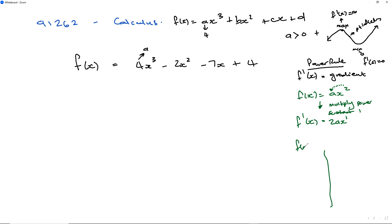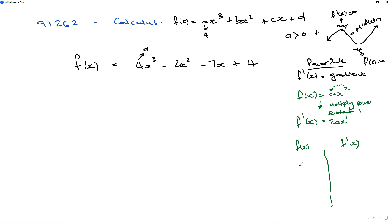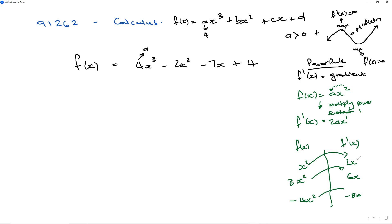Let me do a few examples. If I've got 2x and I derive this, 1 goes to the front, 1 times 2 is 2, and 1 minus 1 is 0, so that becomes x to the power of 0, giving just 2. If I've got 3x, it becomes 3. If I've got negative x, it becomes negative 1. When it's x to the power of 1, the x disappears completely. If I've got x squared, it becomes 2x. If I had 2x squared, that becomes 4x. If I've got 3x squared, it becomes 6x. If I've got negative 4x squared, it becomes negative 8x. Every time we derive, the power reduces by 1.